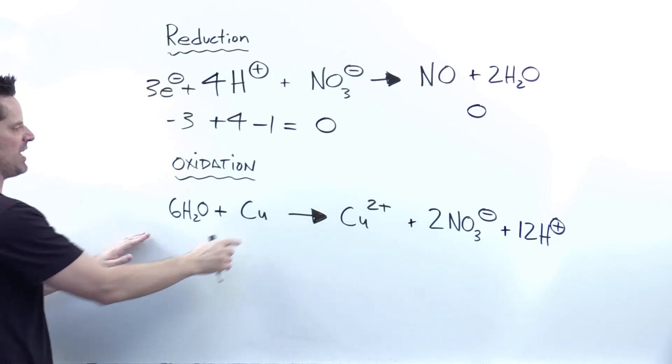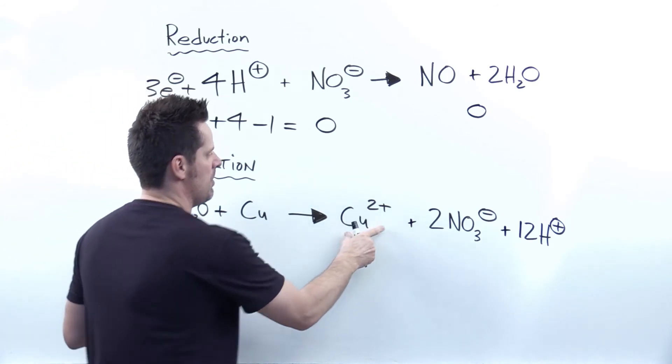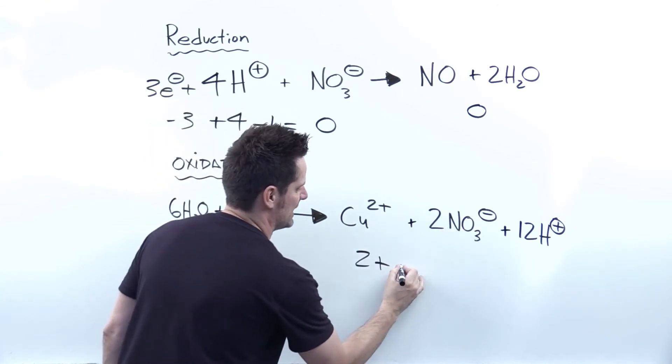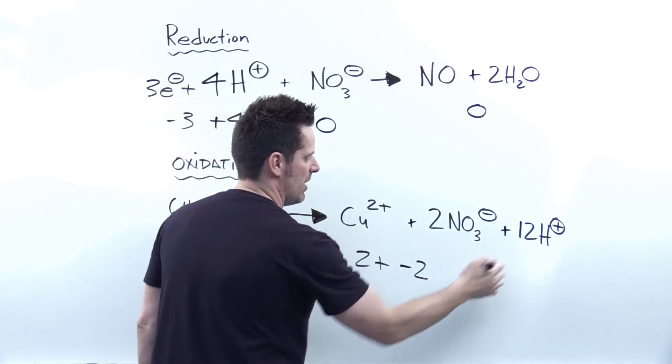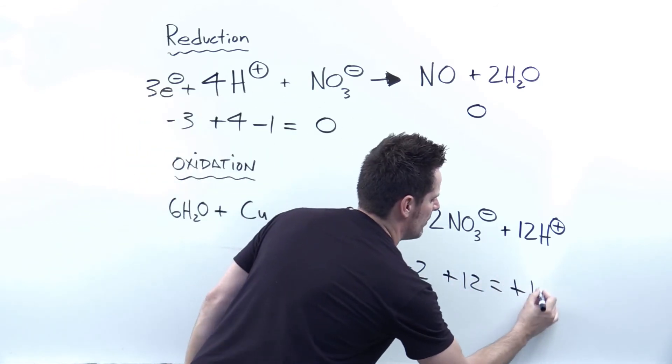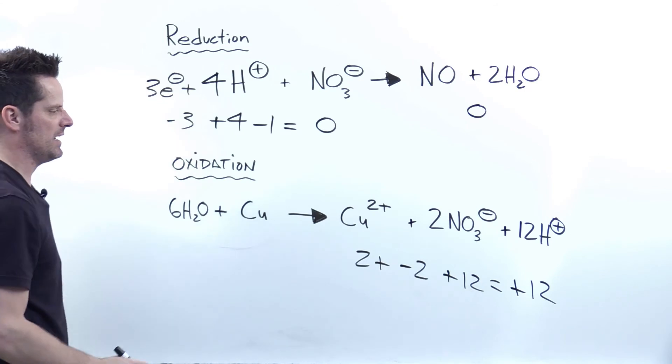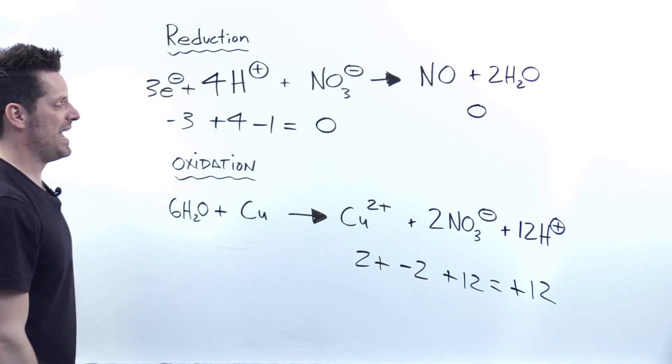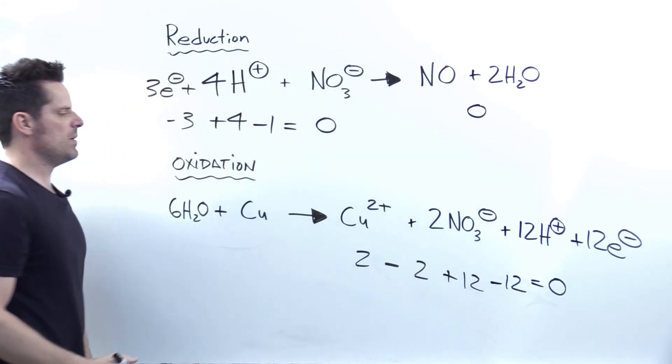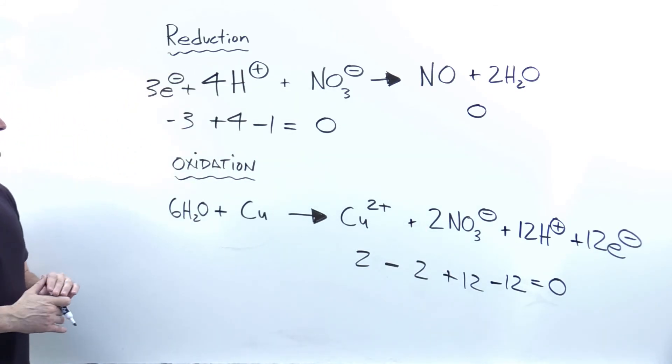Now at the bottom side, I've got all neutral here on the left. On the right then, I've got plus two copper, two nitrates, which are negative one a piece. So that's actually a negative two. And then I've got 12 H pluses. You add all of that together, you end up getting plus 12 overall as your charge for the right side. To balance that out, I'm going to have to add 12 electrons to the right. If you do that, then you end up with an overall zero charge on the right. So my charges are not balanced.